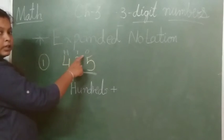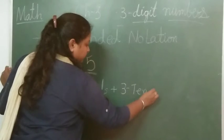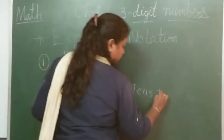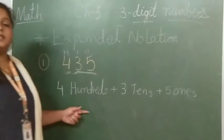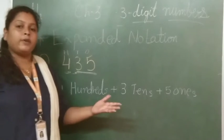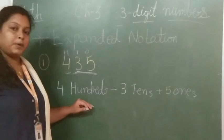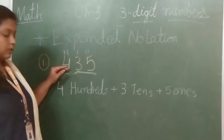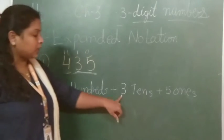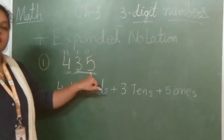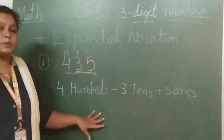As we are writing 435, so 400 plus 3 tens — because 3 is on the place of tens — plus 5 ones. So this is called the expanded notation. You just have to write the number with its proper place. 4 stands in the hundreds place, that means 400. 3 stands in the tens place, that means 3 tens. Plus 5 in the place of ones, so we write 5 ones.